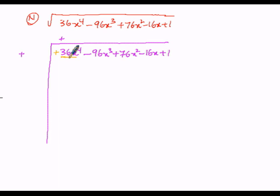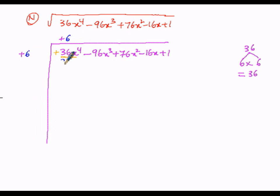36 can be written as 6 times 6, since 6 squared is 36. Here we have to take only 6 times 6, but we should not take 12 times 6. So 6 times 6 gives 36. We have to take only squares since it is a square root.